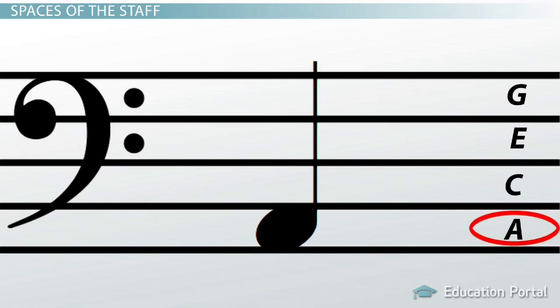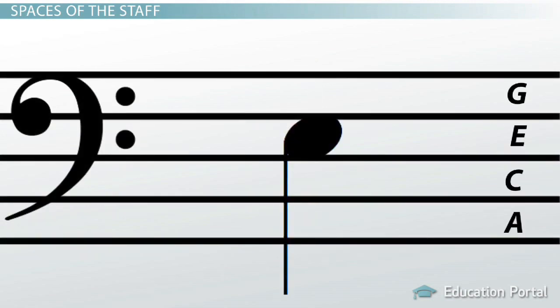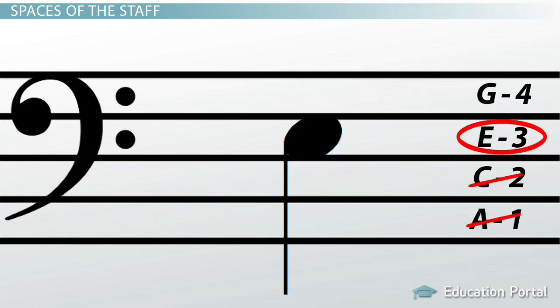If the note is on a higher space, you can simply count which space it is, then find the corresponding letter. So if your note is on the third space, you can simply count over three letters in the sequence. In this case, the note is E because E is the third letter in the sequence.